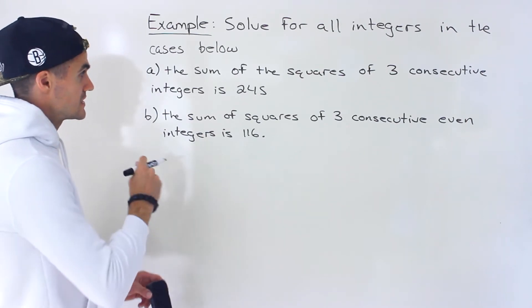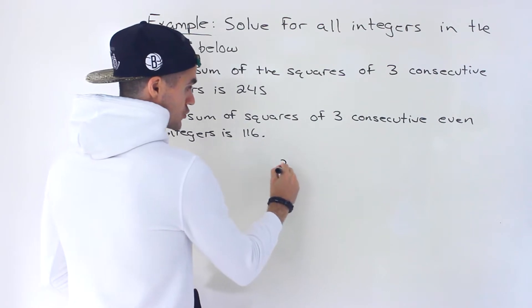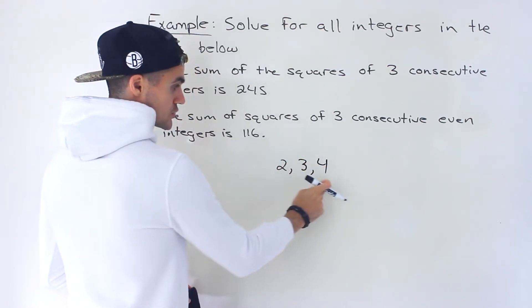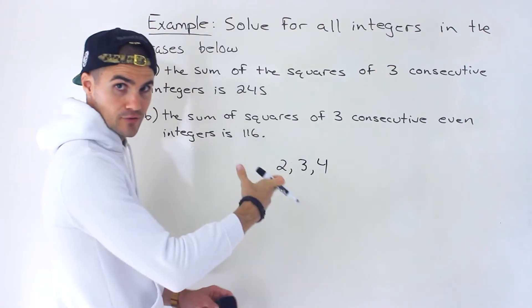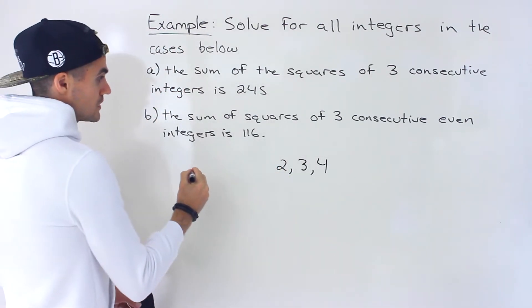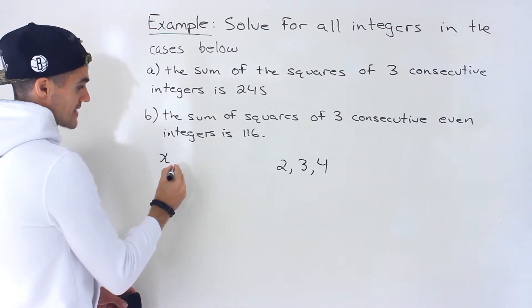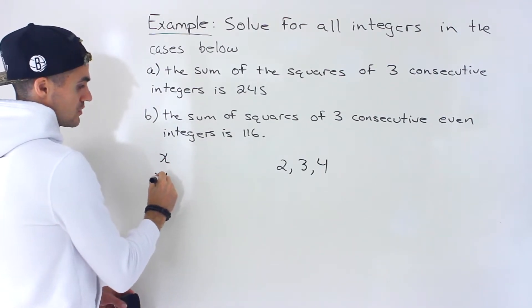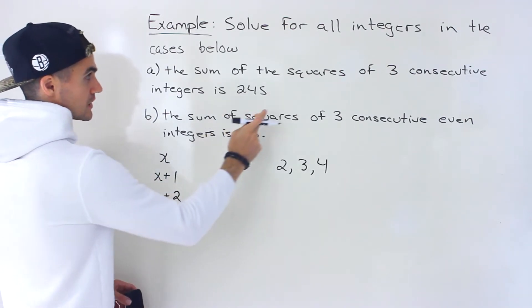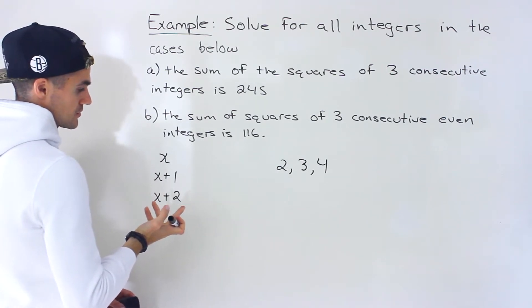When we're dealing with consecutive integers — for example, like 2, 3, and 4 — these are integers that are just right after the other. We're solving for those integers. What we can do is represent the first integer as x, the next integer as x plus 1, and then the third integer as x plus 2. That's how you represent three consecutive integers in terms of variables.